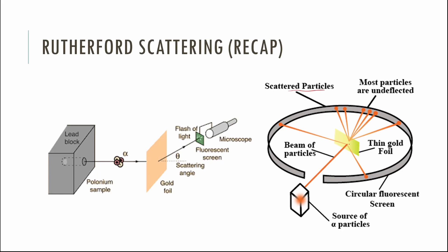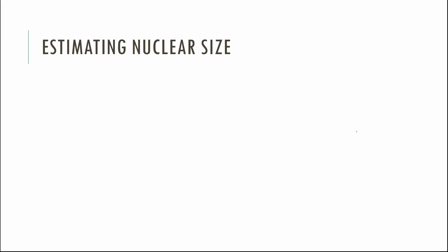This is Rutherford scattering. When you do this specific experiment you get these specific results: most alpha particles go straight through the foil as expected, but some get scattered significantly, and some even get back-scattered — bounced backwards. All of that told us there's a small, positively charged thing in the middle. The number that went through, the angles they went at — all that was put into a formula to predict what would happen.